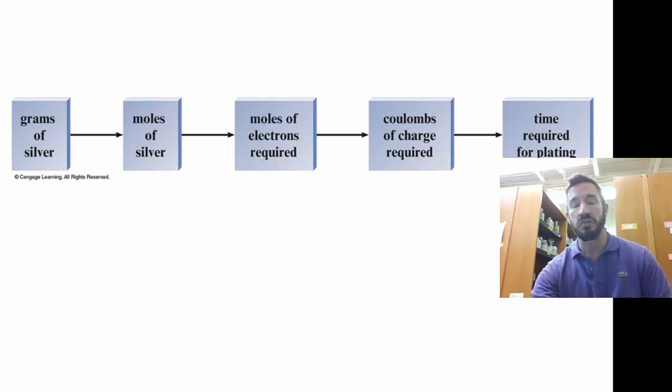So let's look at the sequence of how these problems are solved. For example, if you're given grams of silver or mass of any substance, this is a sequence. You would change that to moles. So then you would go to moles, which is right here. And then you would go to moles of electrons.